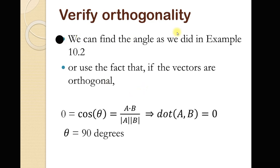We can verify orthogonality using the dot product, because the dot product of two perpendicular vectors is zero. One formulation of the dot product is: cosine of the angle equals the dot product divided by the magnitude of the first vector times the magnitude of the second. The cosine of 90 degrees is zero, so the dot product must equal zero. We'll see code verifying that in a moment.